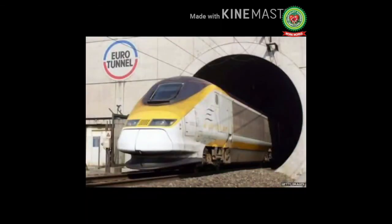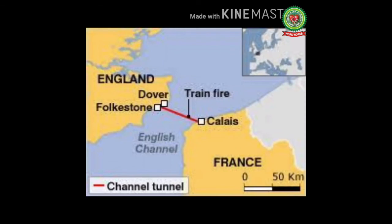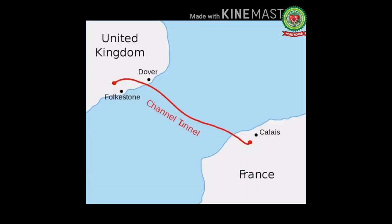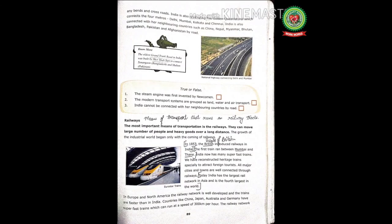Here you can see the Eurotunnel. Eurostar is an international high-speed railway service connecting London with Amsterdam and Paris. It connects England and France. Now, you all have to read pages 88 and 89 and write down the important terms in your copy. Thank you.